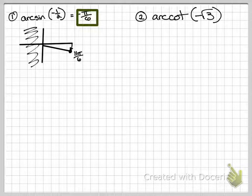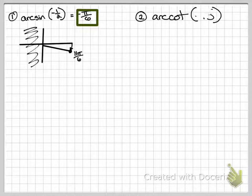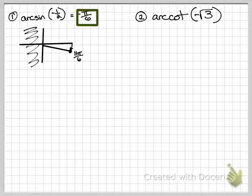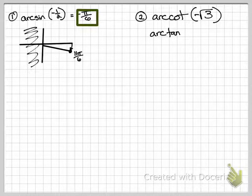So arc cotangent, that's supposed to be a negative root 3 if you can't quite tell. So here's the thing, it's arc cotangent. You need to look carefully at the problem. I want to change it to arc tangent. Since I'm changing it to the reciprocal trig, I need to write it as the reciprocal of negative root 3, which is negative root 3 over 3.